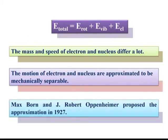Max Born and J. Robert Oppenheimer proposed this approximation in 1927. The statement is: the motion of electrons and nuclei are approximated to be mechanically separable. This is the Born-Oppenheimer approximation. The term 'approximation' is used because, while it is stated that the motion of electrons and nuclei are separable, they are not 100% separable. Therefore, in order to make other calculations easier, it has been approximated that these two are separable, and it is known as an approximation rather than a rule or principle.